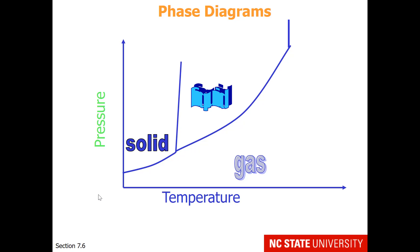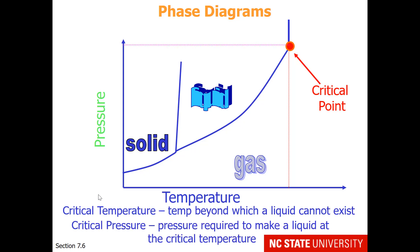Another unusual area on phase diagrams is something called the critical point. This has a critical temperature, which is a temperature beyond which liquid cannot exist, and a critical pressure, which is the pressure required to make a liquid at the critical temperature. Beyond these conditions, we have what's called a supercritical fluid. It is neither liquid nor gas.